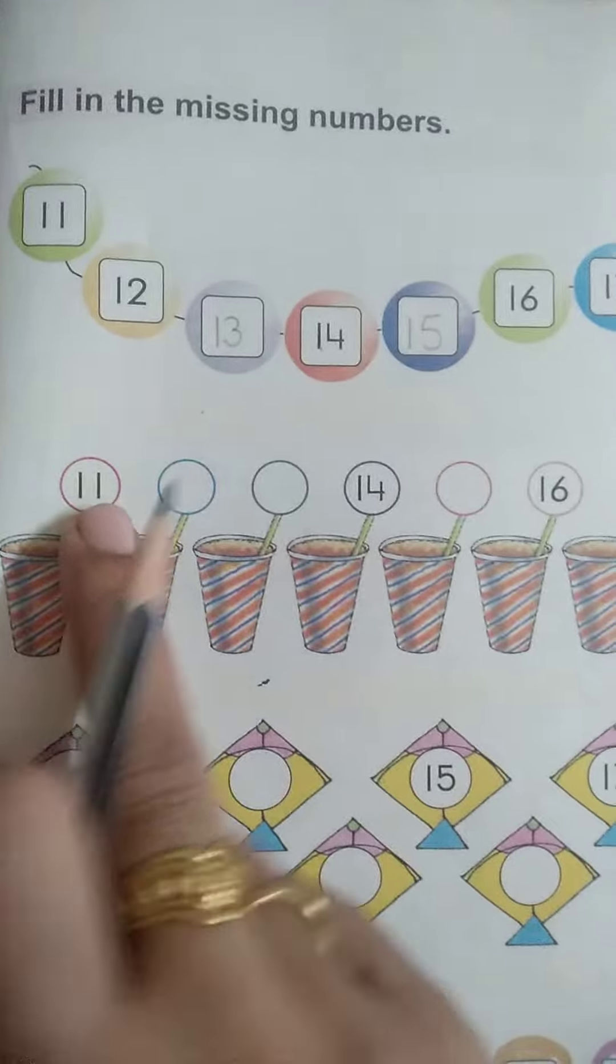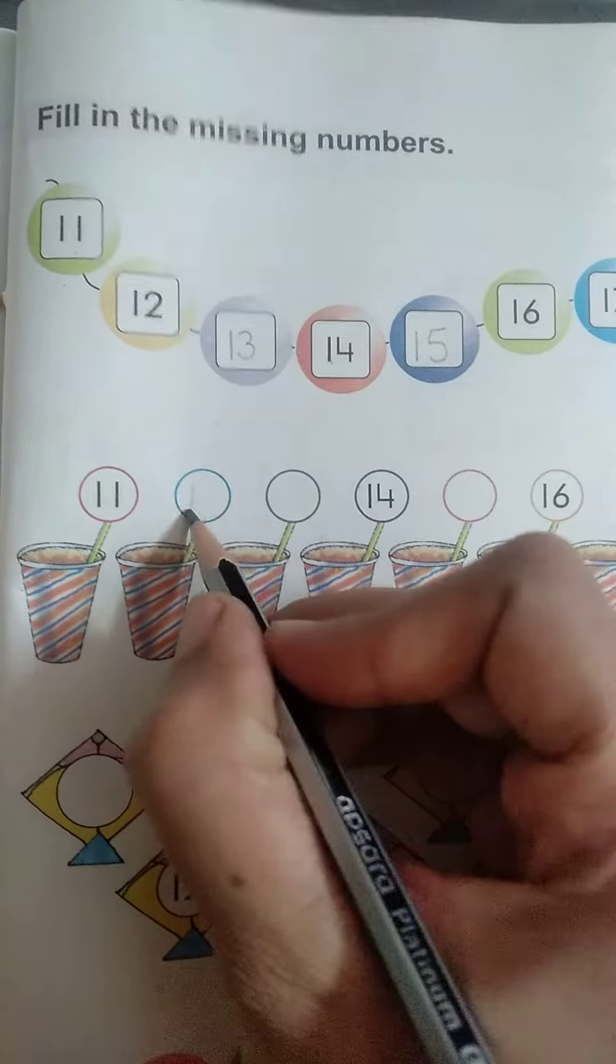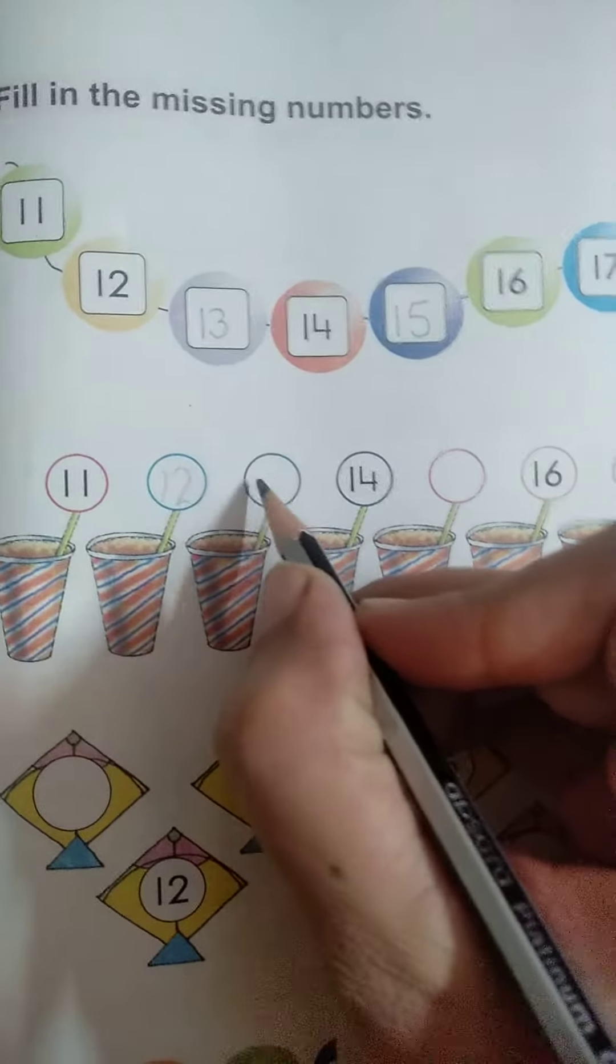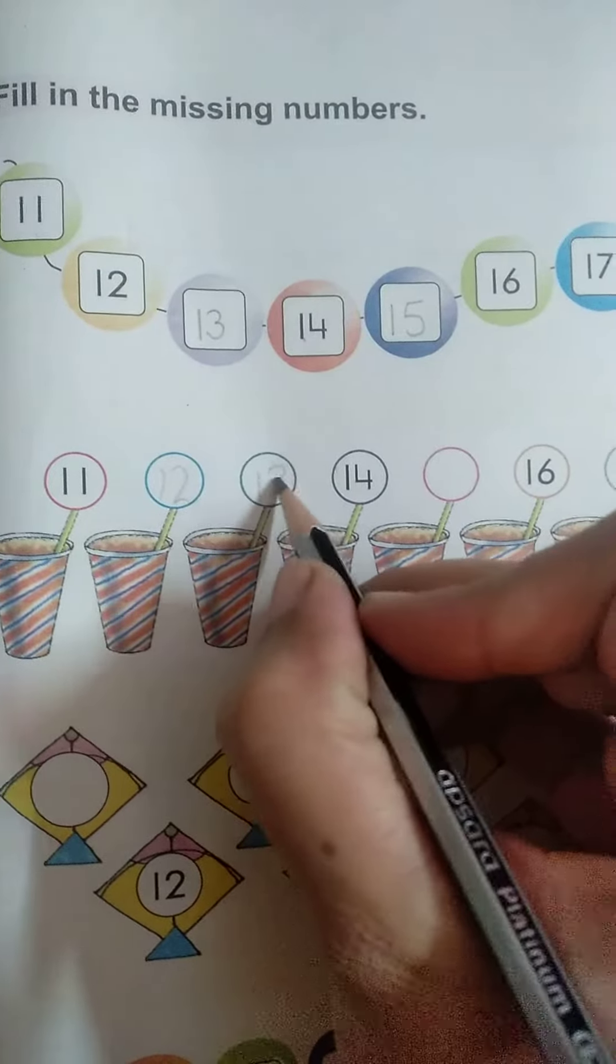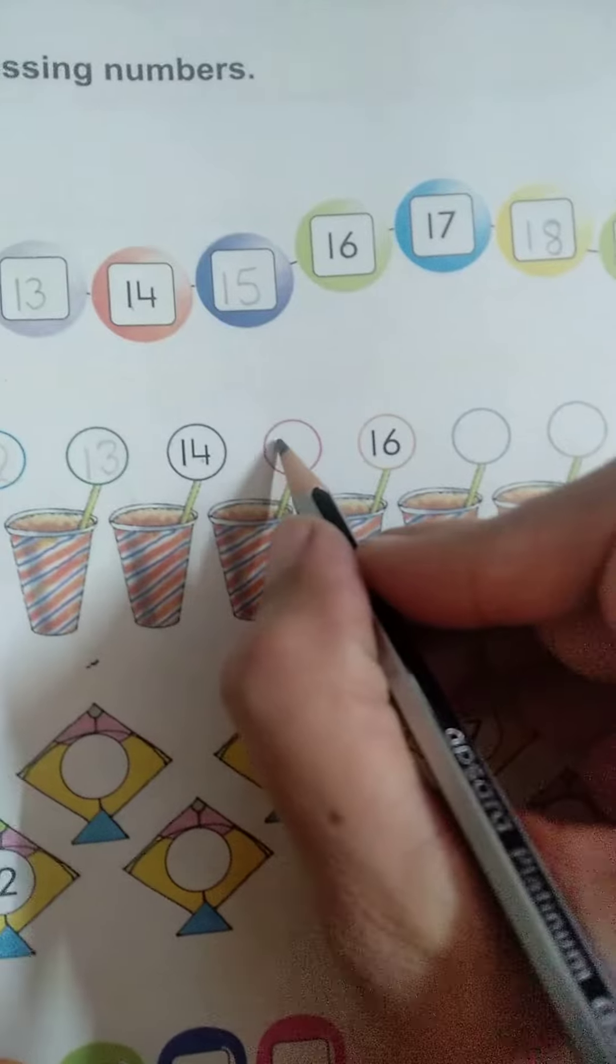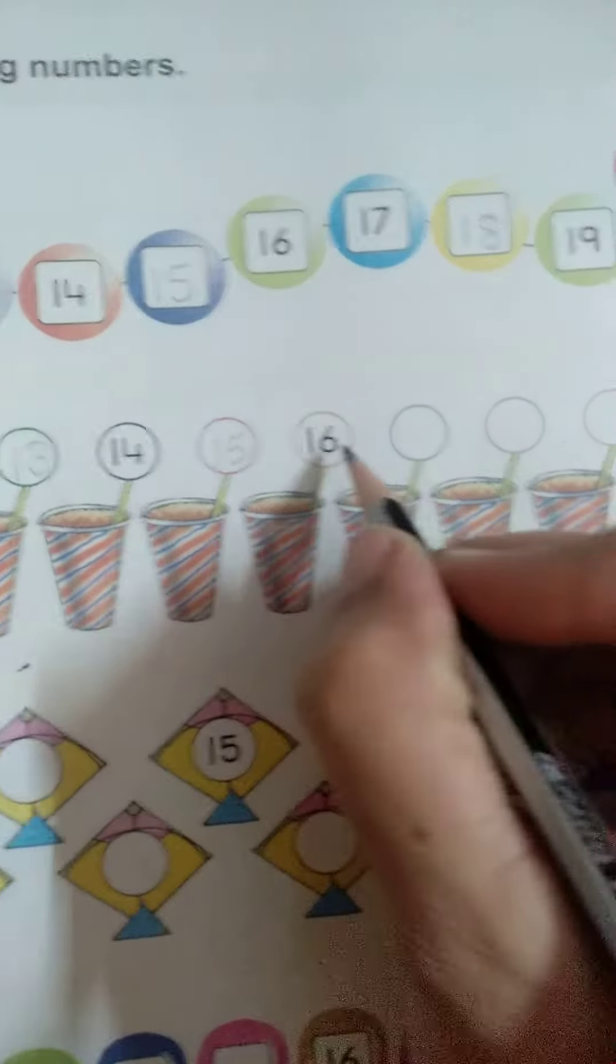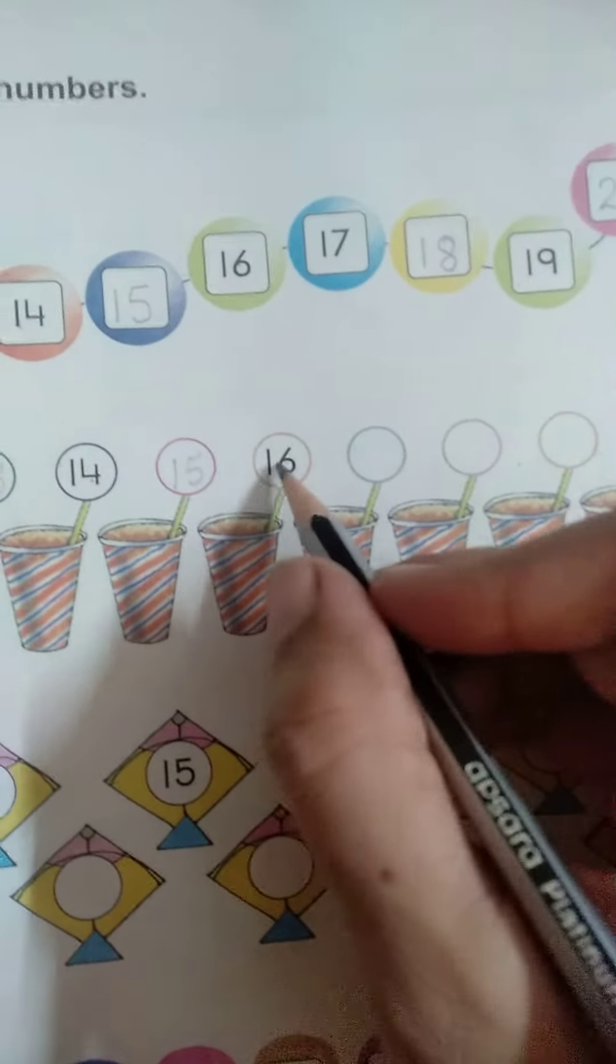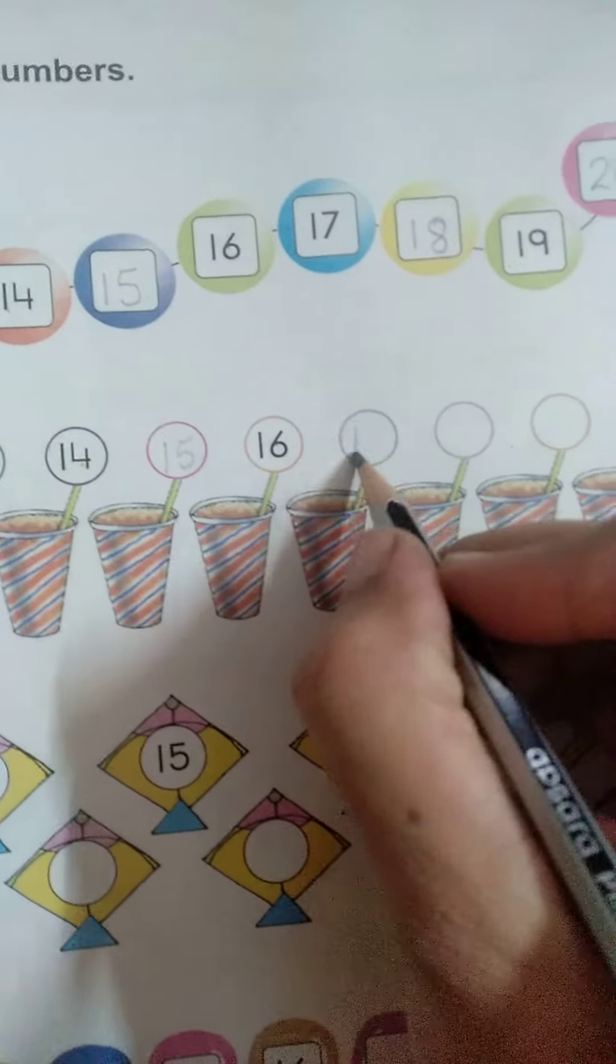Next 11, 12. After 12 next number is 13, 14. After 14 which number comes? 15, 16. After 16 what comes? 17.